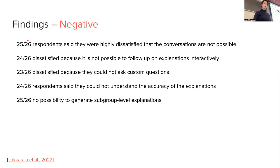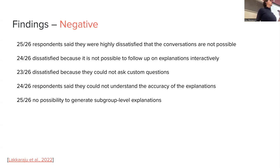Almost all of them, with only one exception, were dissatisfied that conversations were not possible. This really confirms that for people who are engaging with AI systems to take actions, they really want those conversation-style explanation methods — similar to how they would explain something to another person, or how they would expect another person to respond to them. They didn't like that they cannot follow up on explanations.